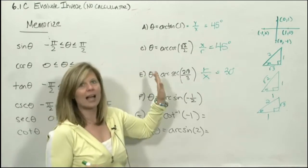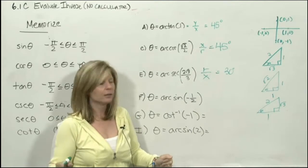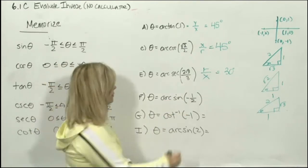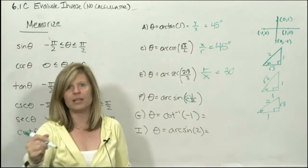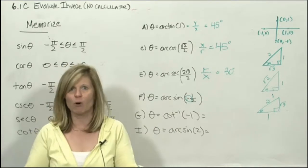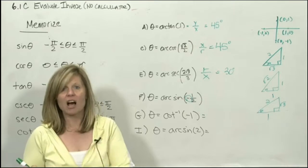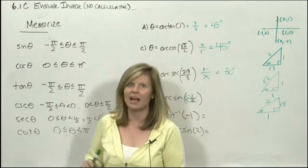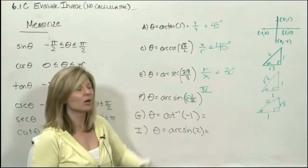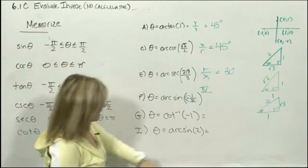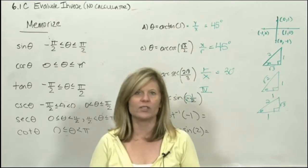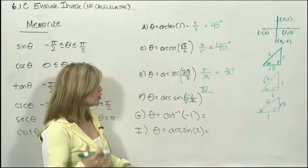Now for arcsin(-1/2) — we're doing an inverse without a calculator. The first thing you notice is the number is negative. If this number is negative, will the angle be in quadrant one? No. Sine can be negative in quadrants 3 or 4, but for sine inverse the principal values go between 0 and negative 90, so the angle must be in quadrant 4.